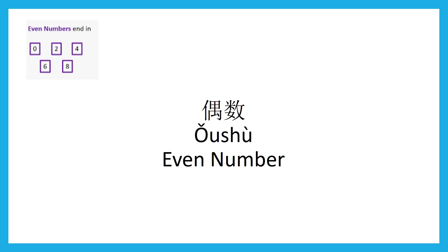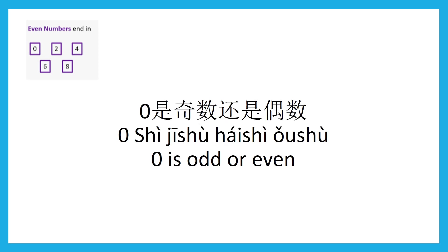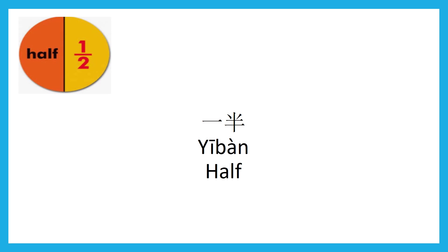Even number — 偶数 (ǒushù). 偶数, 偶数. 0 is odd or even? — 零是基数还是偶数 (líng shì jīshù háishì ǒushù)? Half — 一半 (yībàn). 一半, 一半.